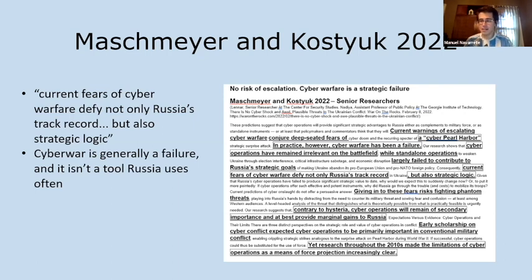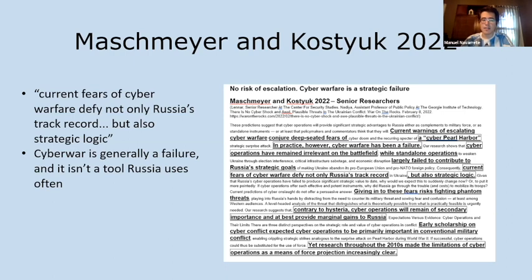The Maschemeyer and Kostyuk evidence is one of the core answers to the first advantage. The affirmative argues that Russian cyber attacks would eventually cause war between NATO and Russia. This piece of evidence says that is not the case — that cyber war generally isn't that beneficial to Russia and isn't a tool Russia exercises frequently. It also doesn't fit into Russia's broader strategic logic, especially in the context of the current conflict in Ukraine.